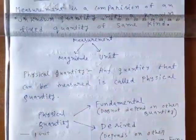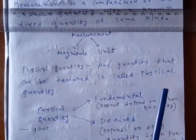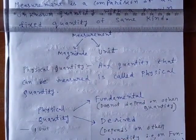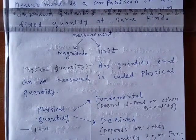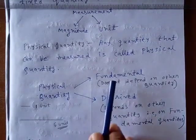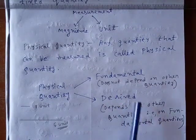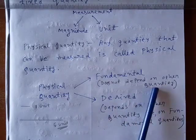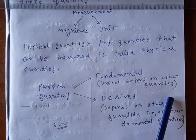Now I am coming to what is physical quantity. Physical quantity is any type of quantity that can be measured. So any type of measured quantity called physical quantity. Now physical quantities are of two types: fundamental physical quantity and derived physical quantity.